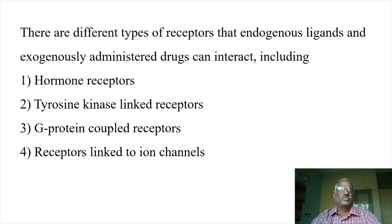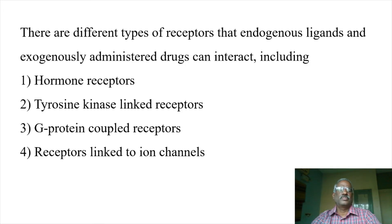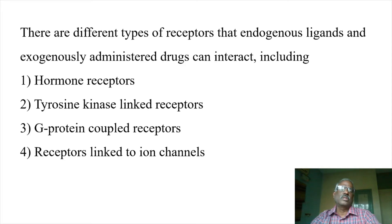The first category is hormone receptors, including steroid hormones and tyrosine kinase linked receptors. For example, the insulin receptor. The second is G-protein coupled receptors, the GPCR family. The third category is the G-protein coupled receptor. The fourth category is receptors linked to the ion channel, involving sodium ion, chloride ion, and calcium ion.